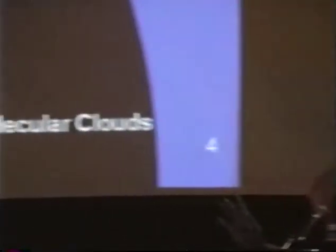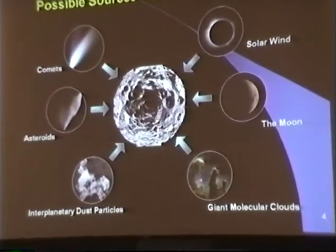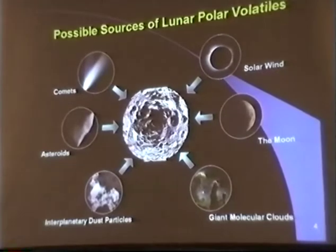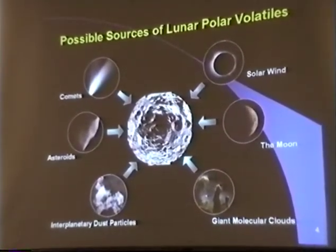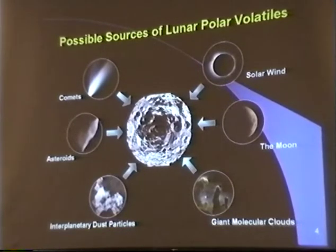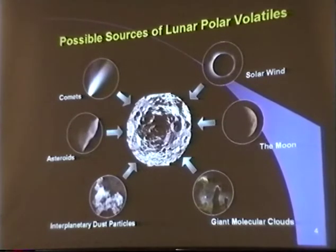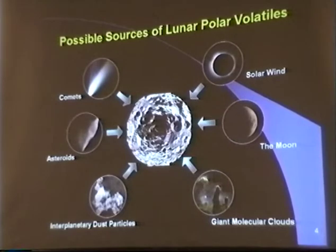That doesn't mean the moon itself is depleted of all volatiles, because there's external addition of volatiles. As the moon is constantly hit by material from space — cometary cores, meteorites, water-bearing meteorites, interplanetary dust particles — volatile material is added. All of these objects contain either water-bound silicates or water present in the form of ice, either crystallized or amorphous, plus a whole range of other volatiles available beyond the snowline in the early solar system.